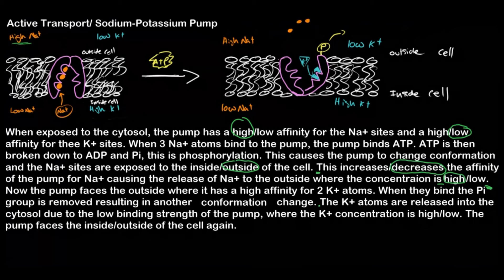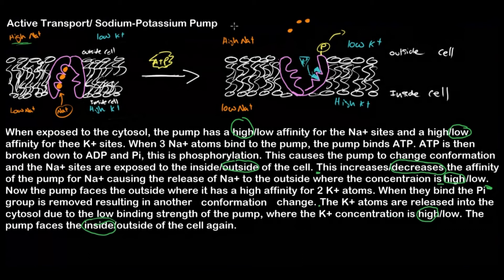Now that the potassiums are bound and the inorganic phosphate is removed, there's another conformational change that reverts the pump to its original shape facing the inside of the cell. The potassium atoms are then released into the cytosol due to the low binding strength of the pump in this conformation. The pump is now pumping potassium to where its concentration is already high — inside the cell — and the pump faces the inside again.